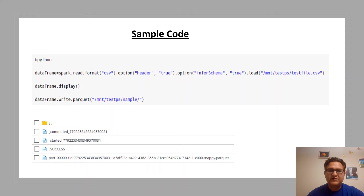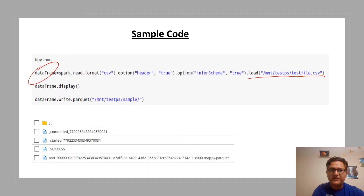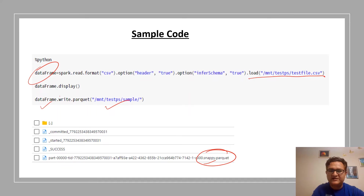This is a sample Parquet code you can run on your local machine to see how it behaves. In this example, we have loaded a CSV file into a DataFrame, and then we are writing that DataFrame to blob storage or S3 based on your need. You will see a Parquet file being stored and it has Snappy compression attached to it.